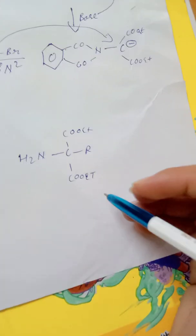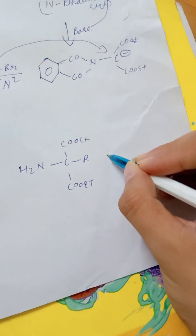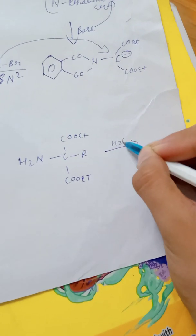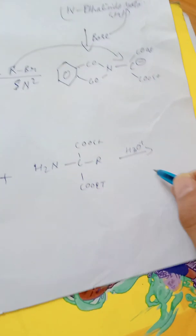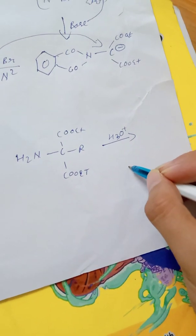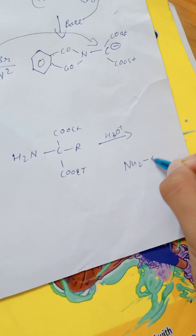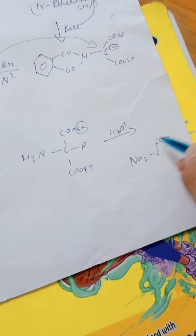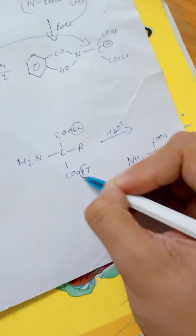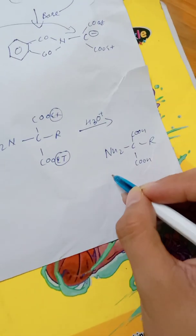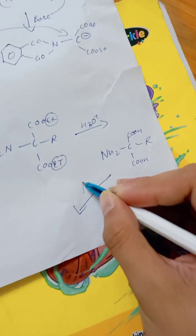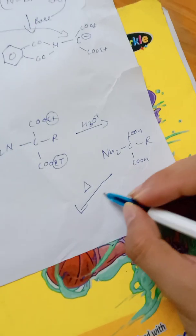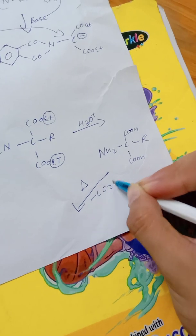Now what we will do is once again hydrolysis with H3O+ and the product which we will get is H2N-C with COOH. Basically this OC2H5 will become OH, this OC2H5 will also become OH.